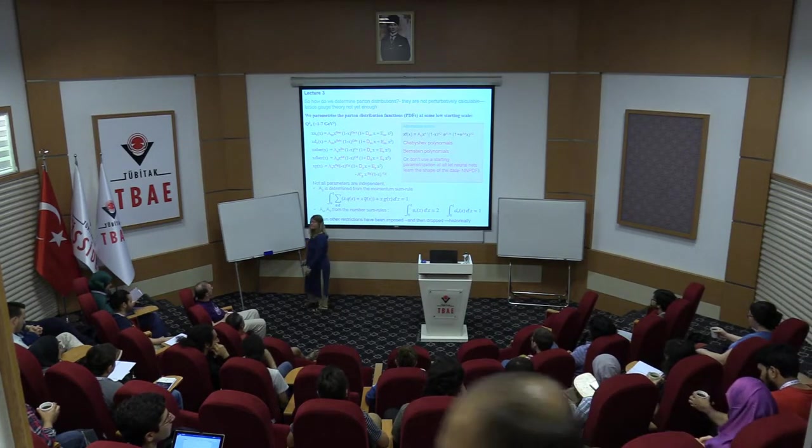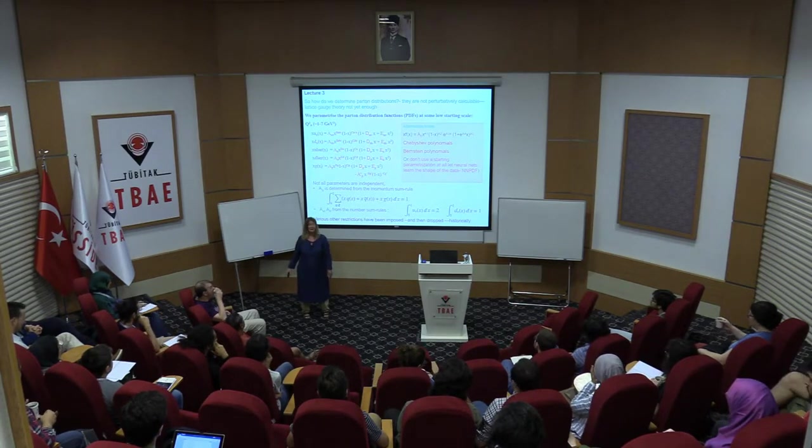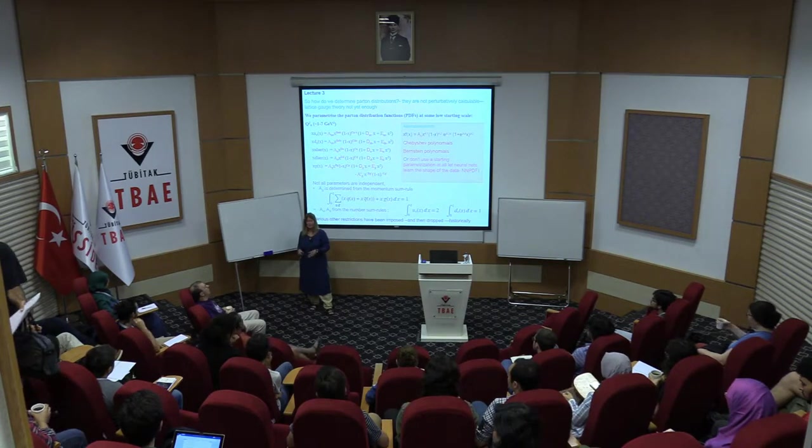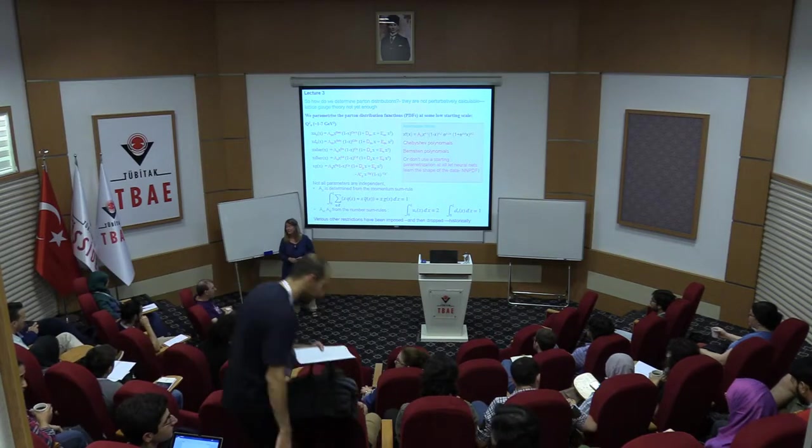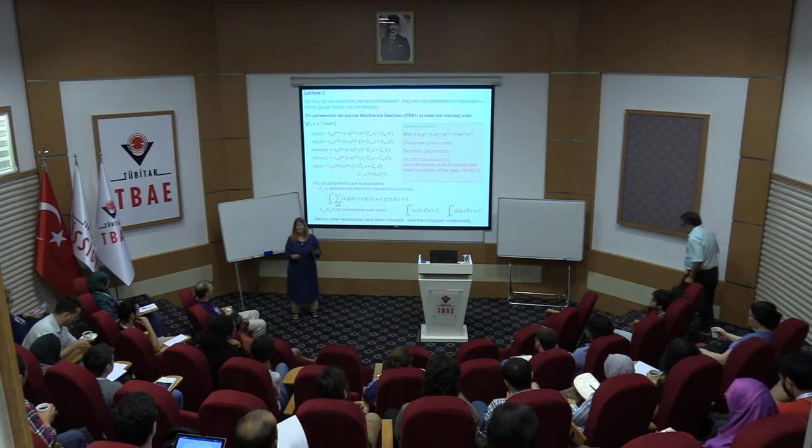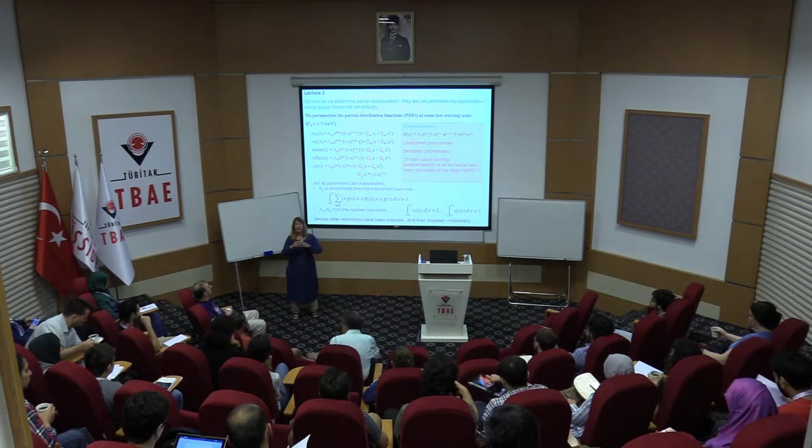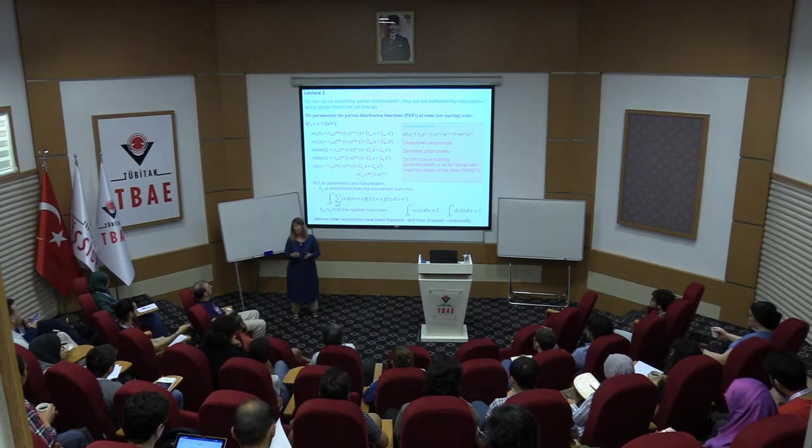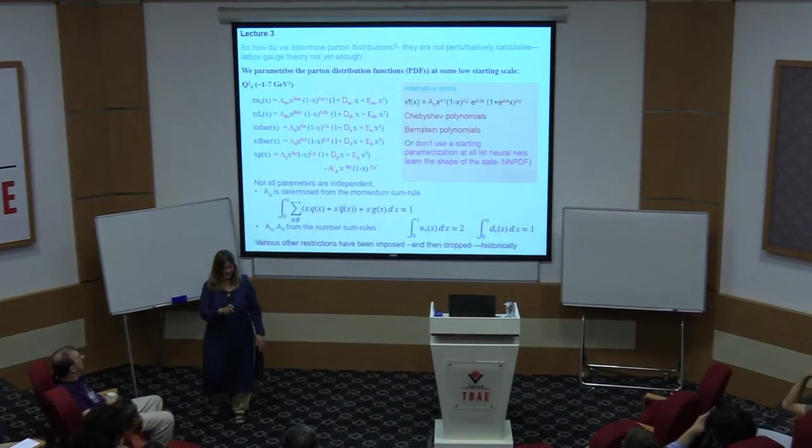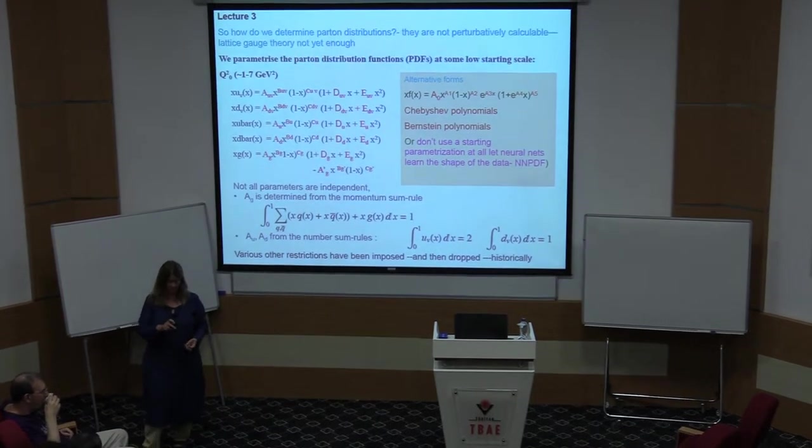So we went through the background of how we came to believe in the quark parton model and how QCD improves that to take into account the gluon radiation and is a proper field theory of what's going on. I'd said to you that the problem with parton distributions is that we cannot calculate them perturbatively, but once we know what they are at a low scale, QCD then tells us exactly what they are for all higher scales. In this lecture, I was just going to outline to you how do we then actually determine them? How do we know what we've got?